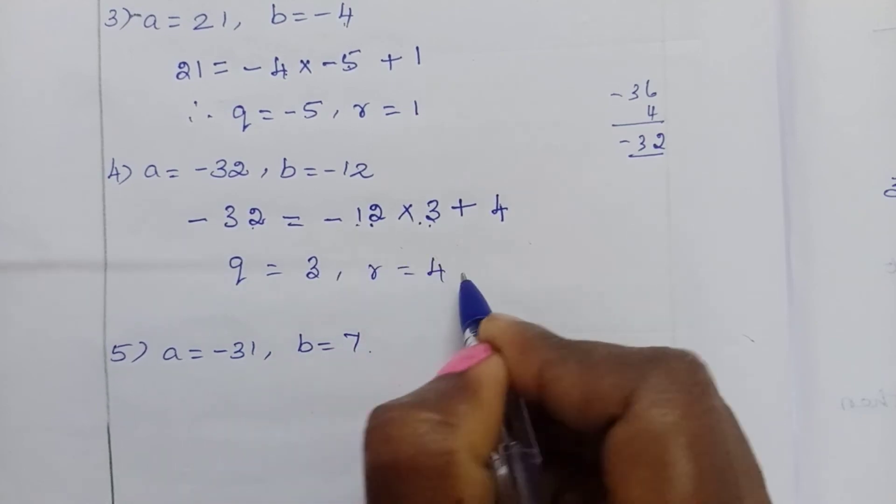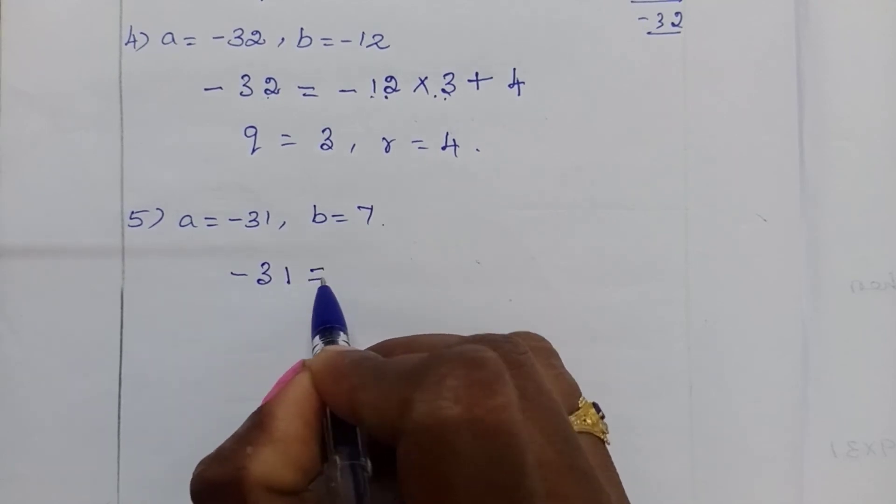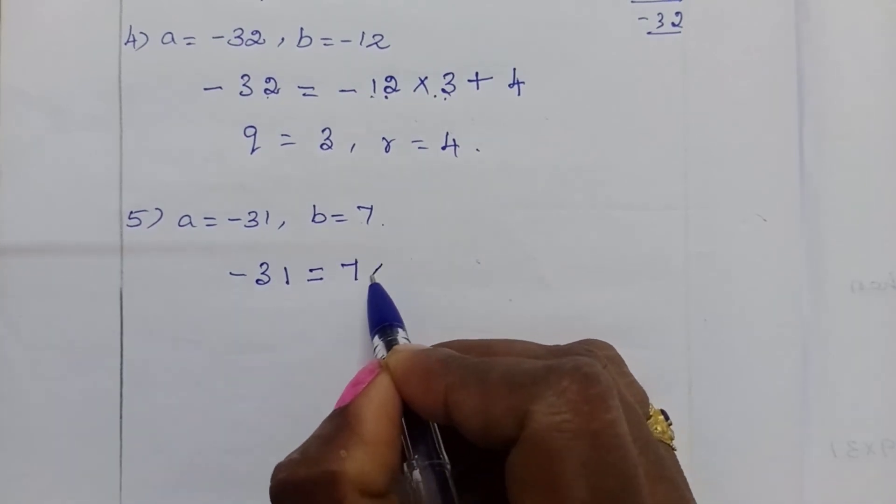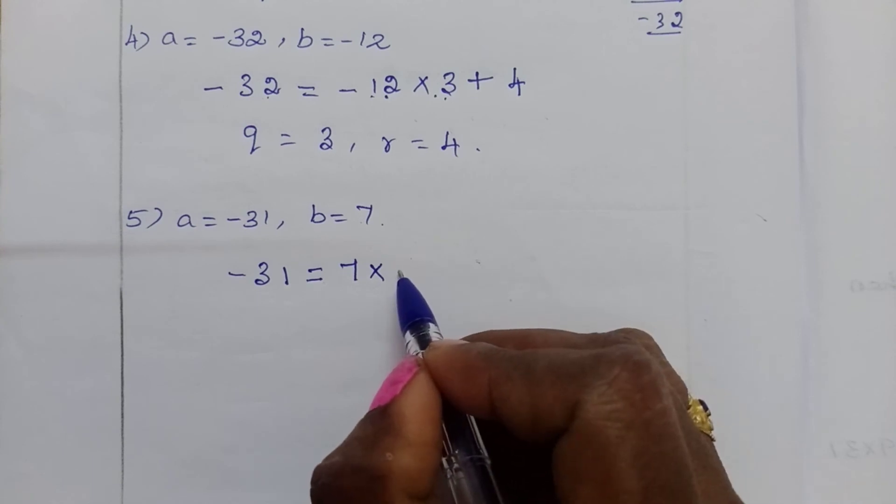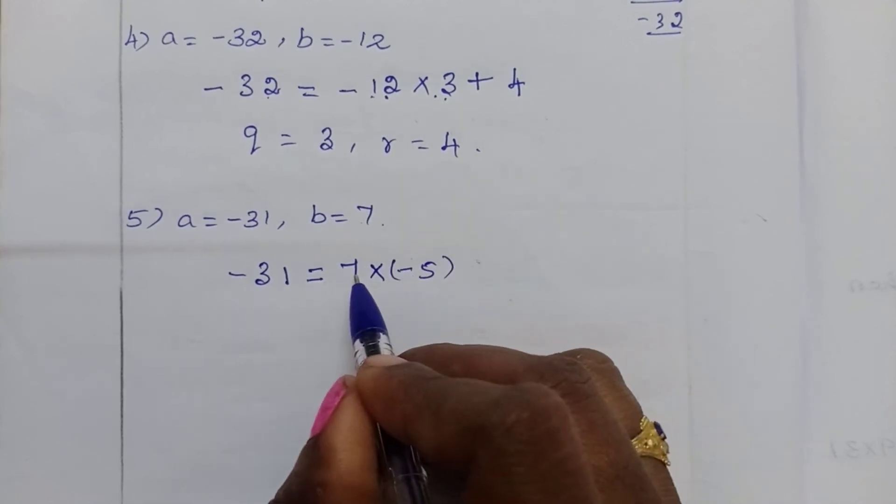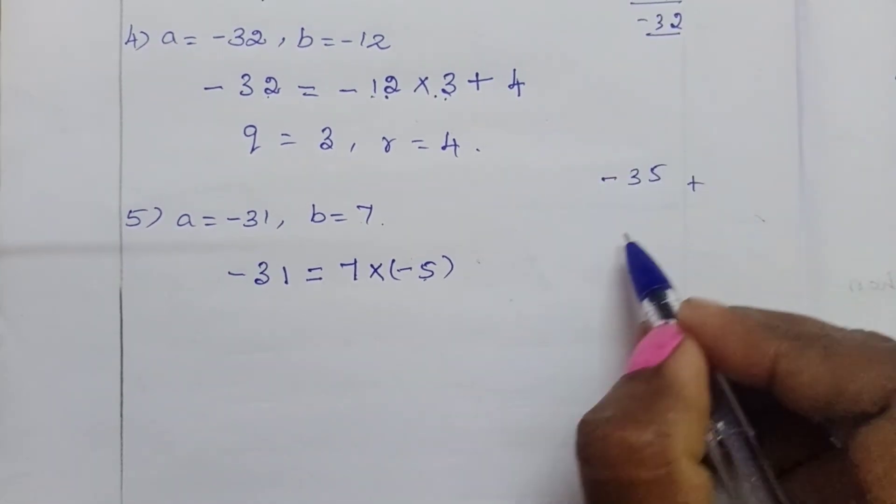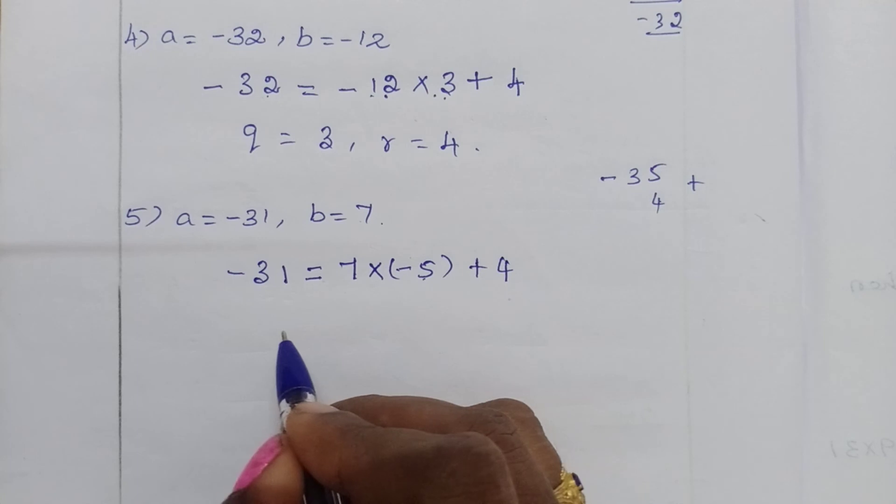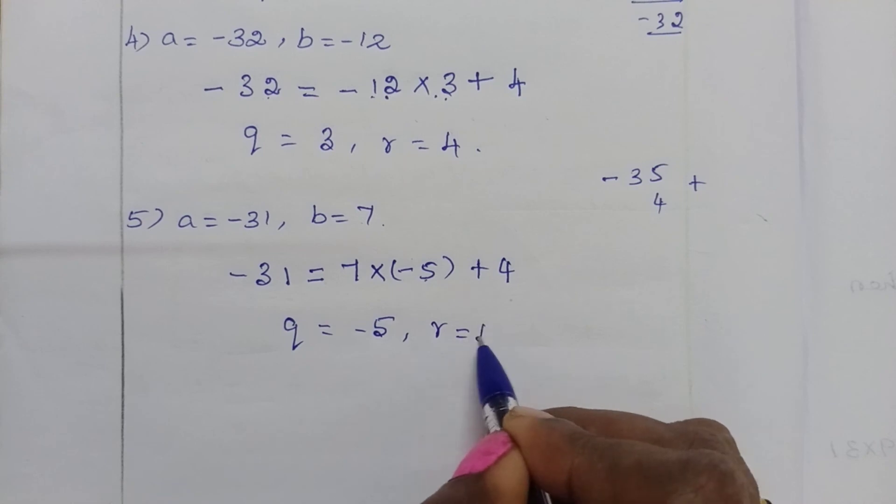So the fifth problem, minus 31 equal to, here divisor is 7. So 7 into, here also, if we put positive number, this becomes positive. So here we need a negative number. So if you put minus 5, what you will get: 7 into minus 5, minus 35. Minus 35 plus, how much we can put? 4. So plus 4. So quotient is equal to minus 5, reminder is equal to 4.